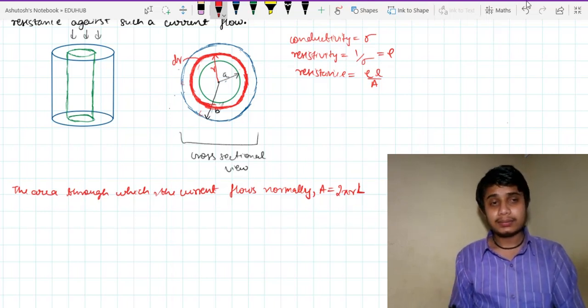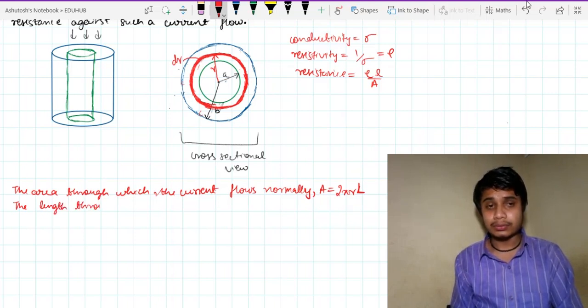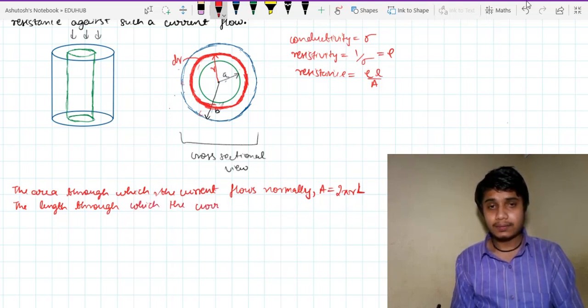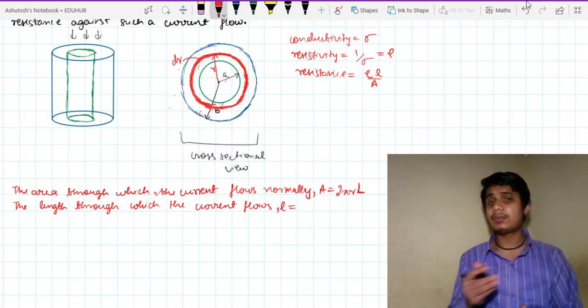So the length through which the current flows, let me denote it by small l. This small l is different from the capital L.